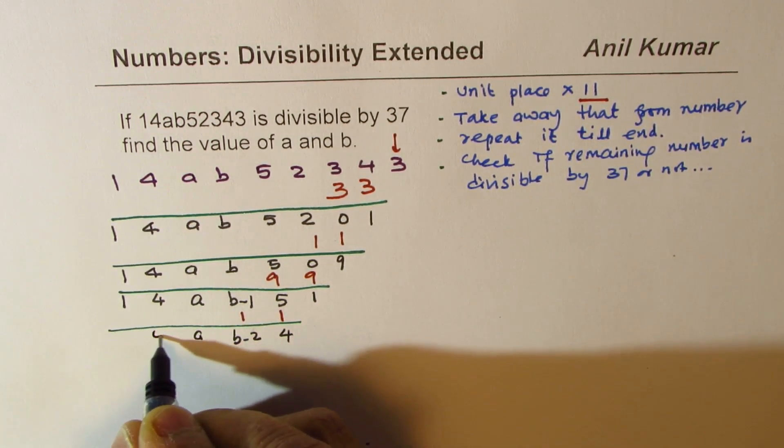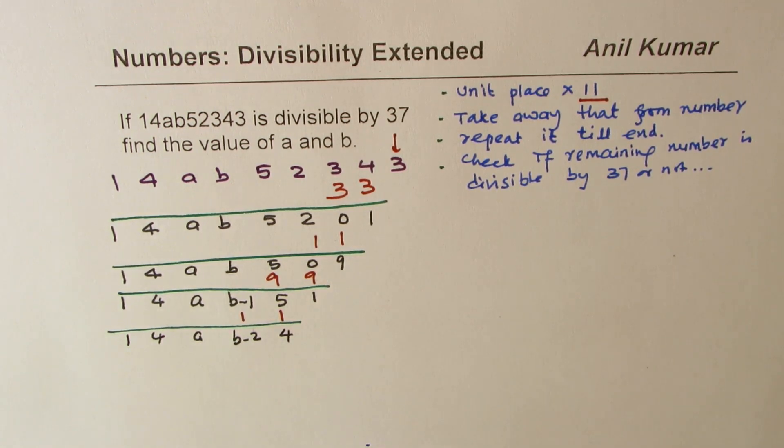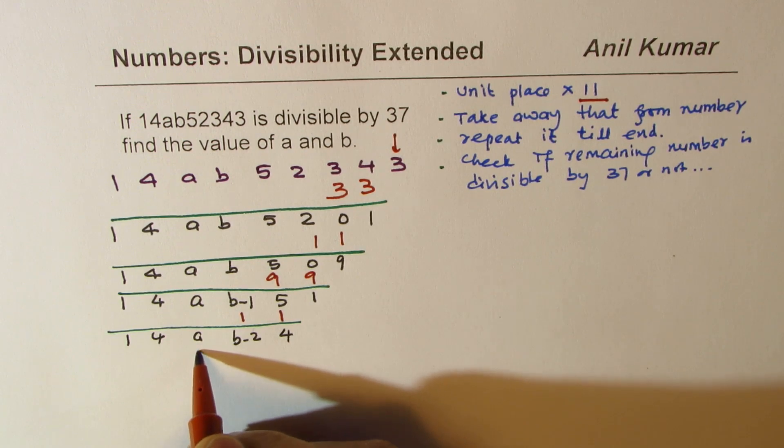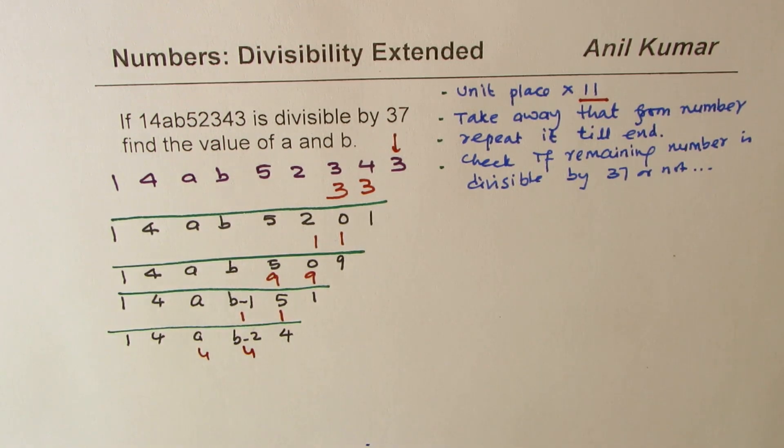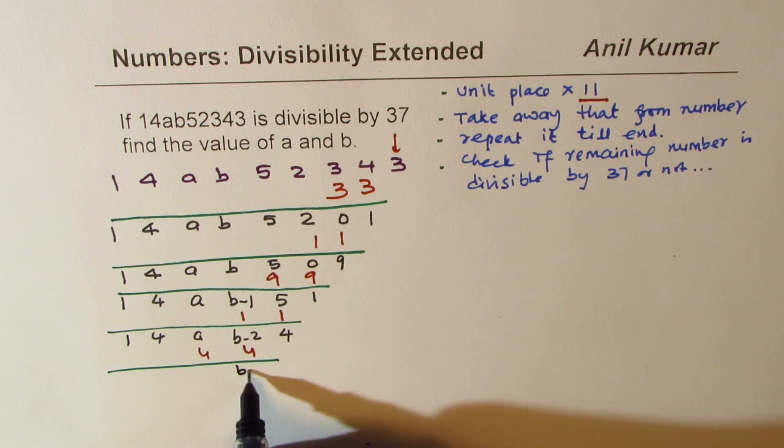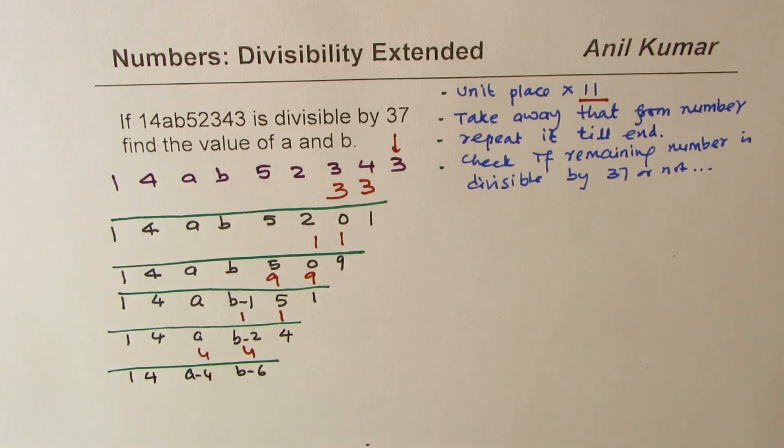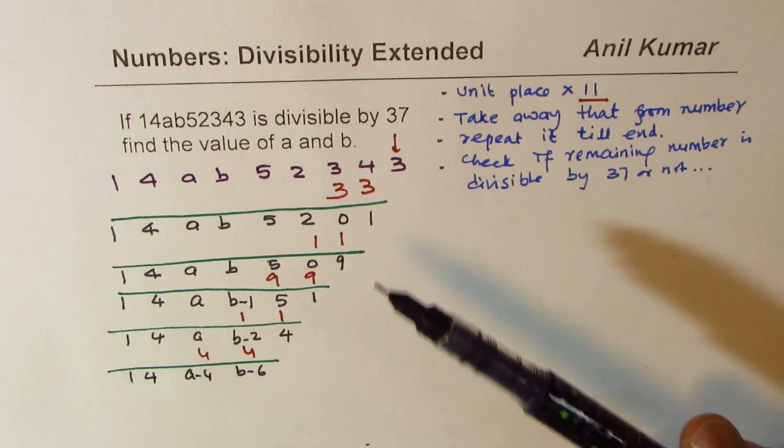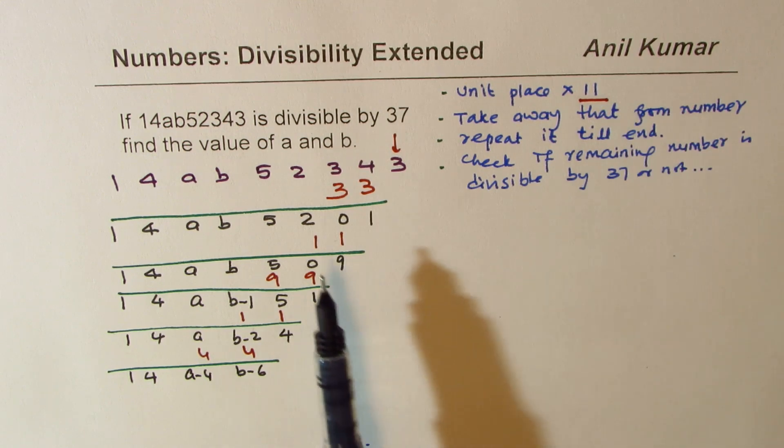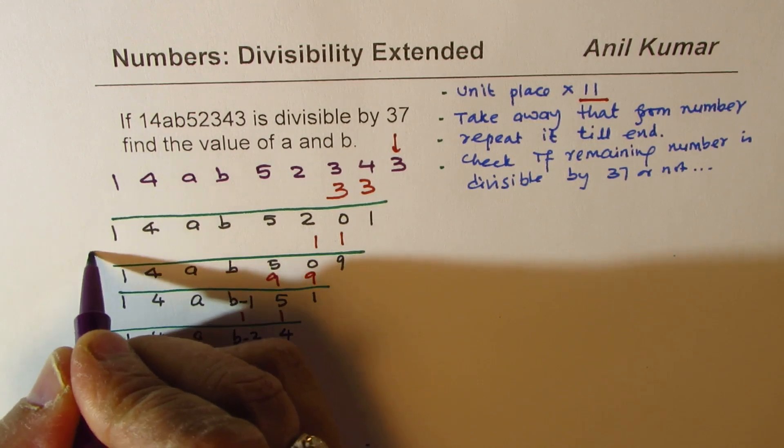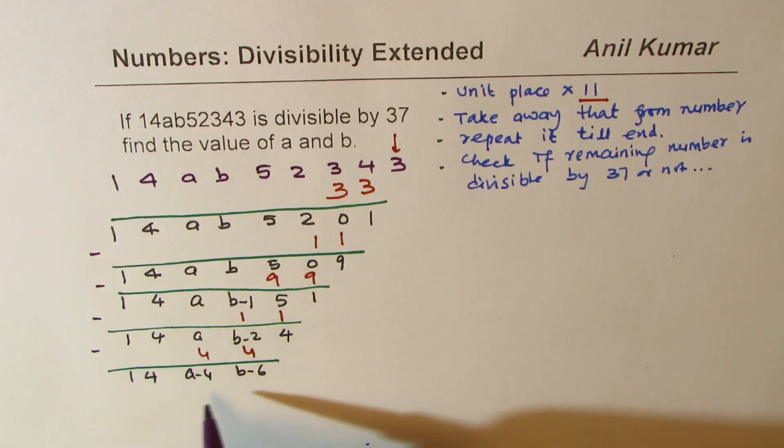So now, we don't know how to go about. We have something like B minus 1. Anyway, we can go one more step. 1 times 11 is 11, so we'll take away 11 now. Then what do we have? 5 minus 1 is 4, we get B minus 2. Still we can work. Okay. This time, we have 4, so we have to take away 4 now. When we take away 4, we get B minus 6, A minus 4, and we have 14 here.